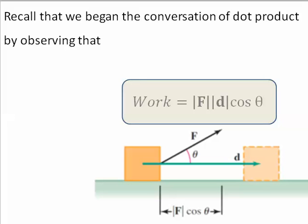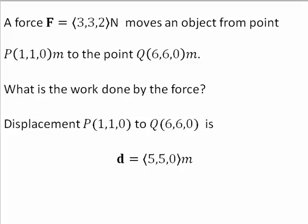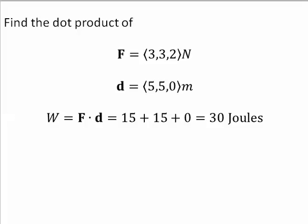Recall that we began the conversation of dot product by observing that work is equal to the magnitude of the force times the magnitude of the displacement times the cosine of the angle between force and displacement. Given this force, which moves an object from point P to point Q, the displacement vector is 5, 5, 0 meters. Work is the dot product of the force vector in newtons dotted with the displacement vector in meters, and work is 30 joules.